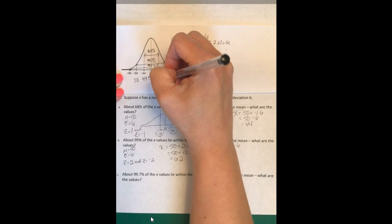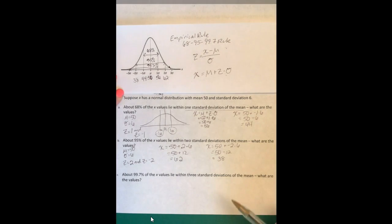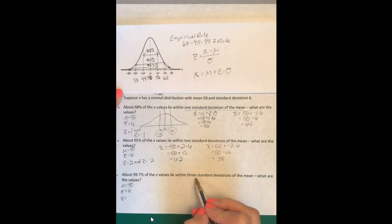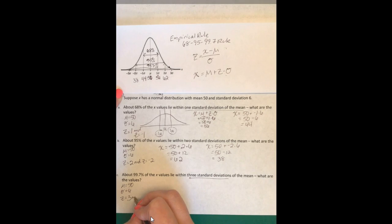And then 99.7%, that's when the X values lie within three standard deviations. So Z is 3 and Z is negative 3. We have 68 and 32.